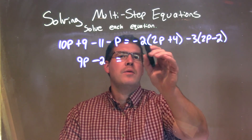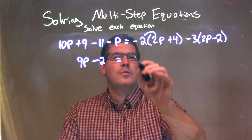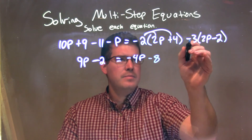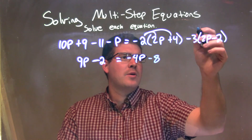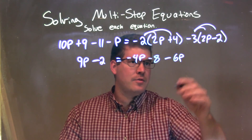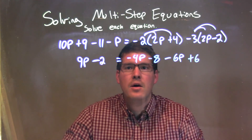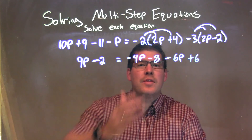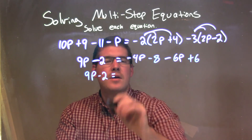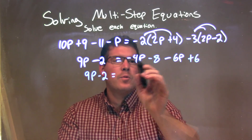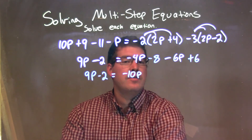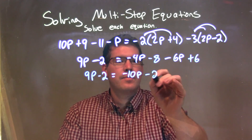Now I'm going to distribute on the right-hand side. Negative 2 times 2p is negative 4p, and negative 2 times 4 is negative 8. Then I'm going to distribute this minus 3 across: minus 3 times 2p is minus 6p, and minus 3 times minus 2 is positive 6.